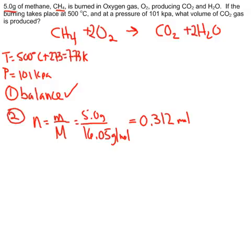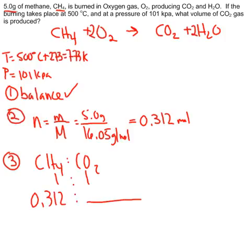Now we have the moles of something we know, and we need to compare that to the thing we don't know, which is the CO2. So we do the mole ratio, comparing CH4 to CO2. When we look at the balanced equation, the mole ratio is 1 to 1. But we have 0.312 moles of CH4, so when we cross-multiply, we get 0.312 moles of CO2.